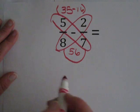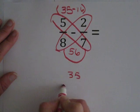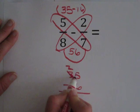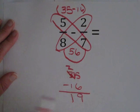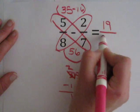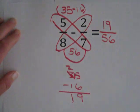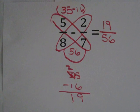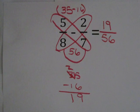35 minus 16 is 19. So 19 over 56 is the final answer. That is 5 eighths minus 2 sevenths. This is one way to subtract and add fractions using the butterfly method.